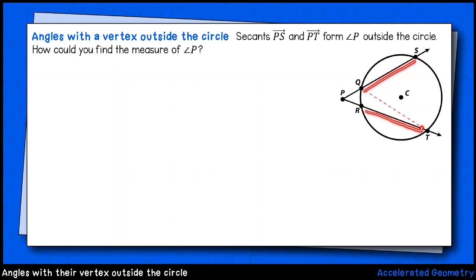In this example, we're told that we have two secants, that is, lines that pass through the circle intersecting it at two distinct points. These secants meet at point P and form angle P. What we would like to know is, what is the measure of angle P?